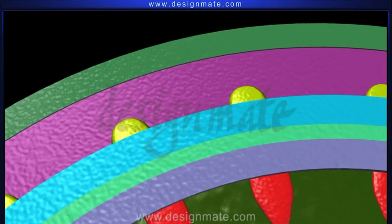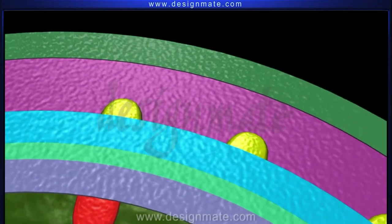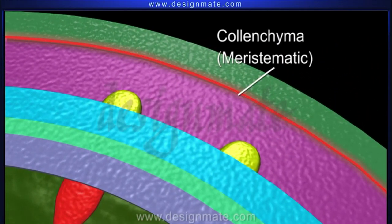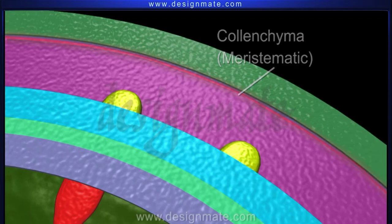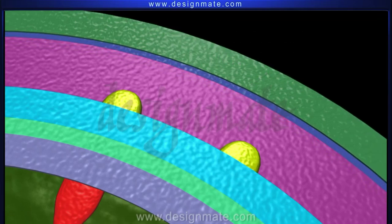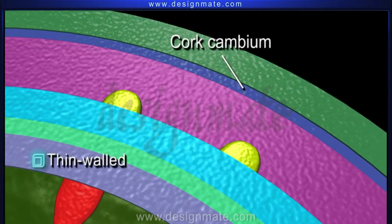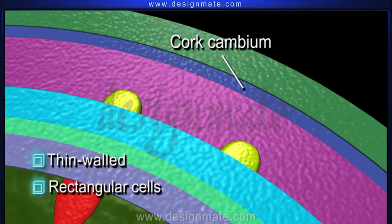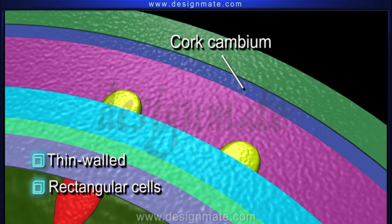To prevent this, the outer layer of collenchyma becomes meristematic and divides to produce a thin strip of thin-walled, roughly rectangular cells which constitutes the cork cambium.